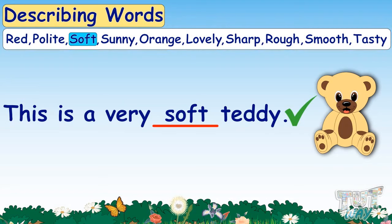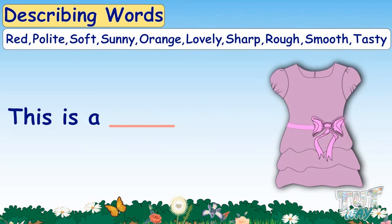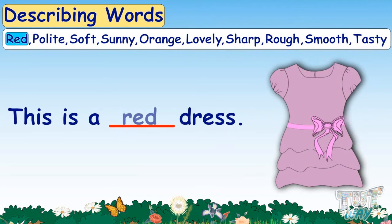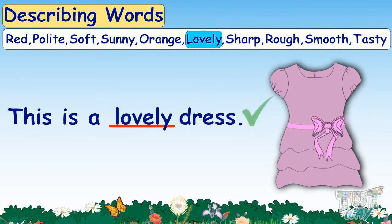Here is our last example. This is a ___ dress. Now we have to find a suitable describing word for this dress from the given words. Can it be red? No. Polite? No. Soft? No. Lovely? Yes! We can put lovely here. This is a lovely dress.